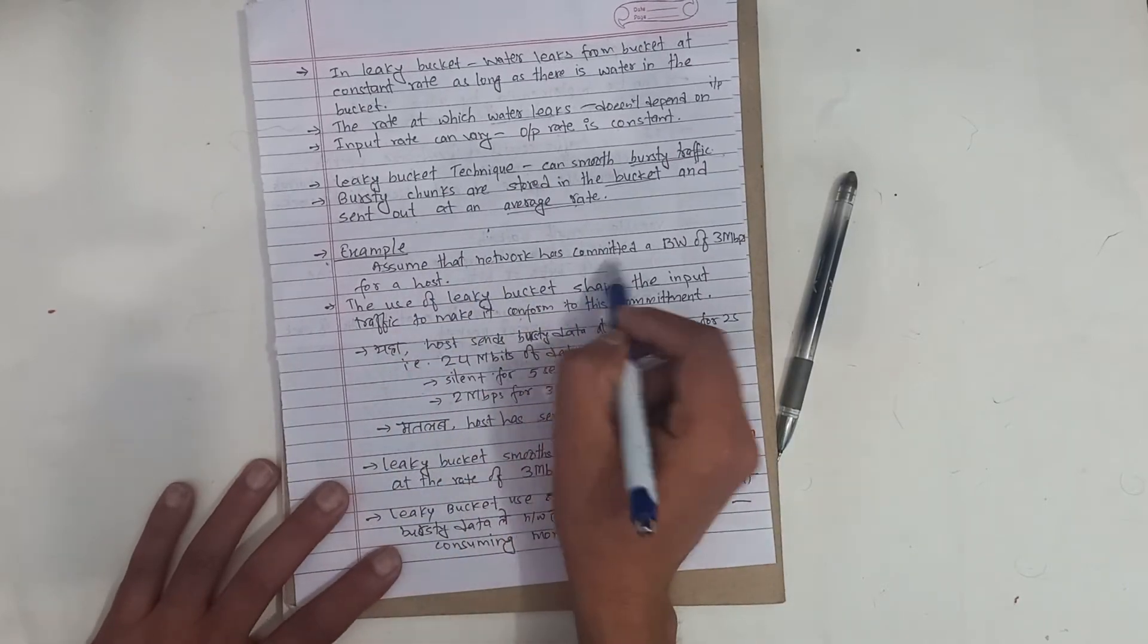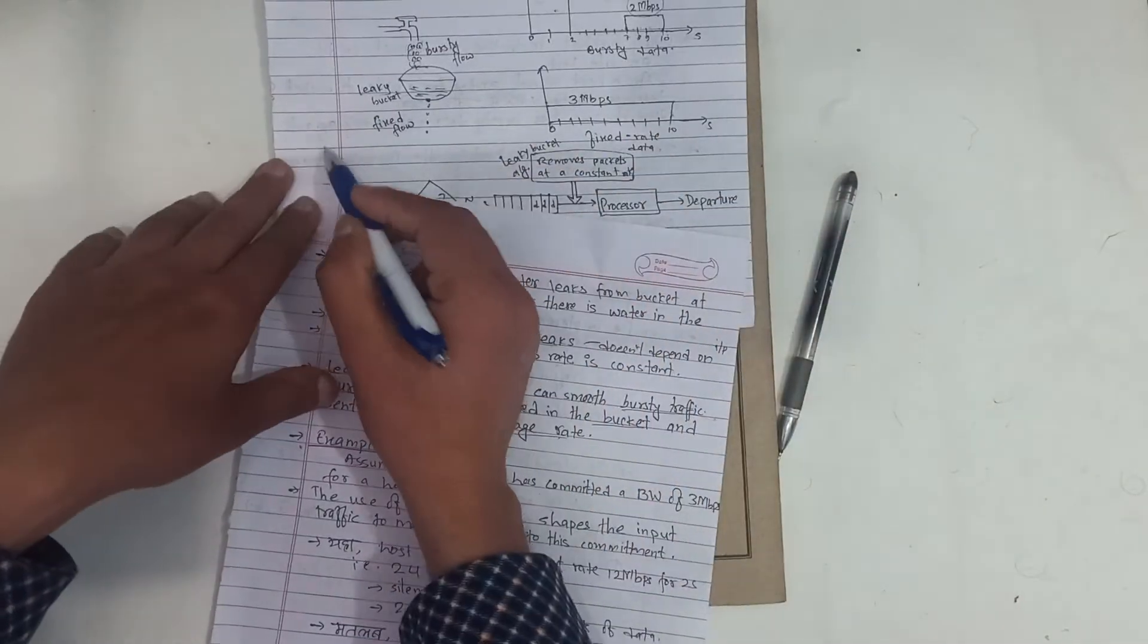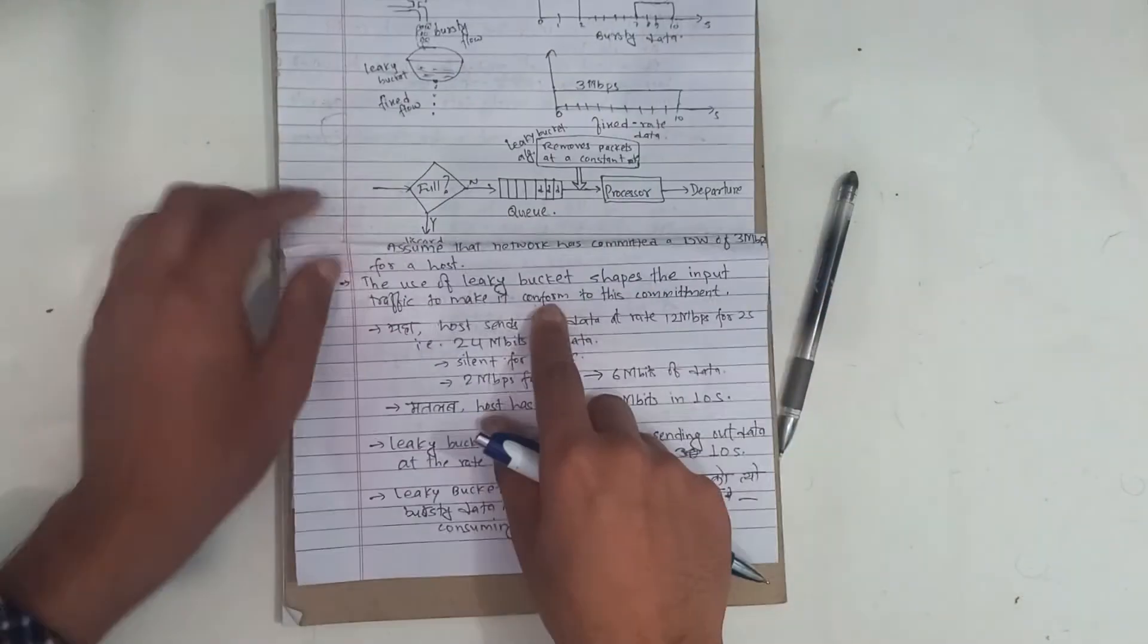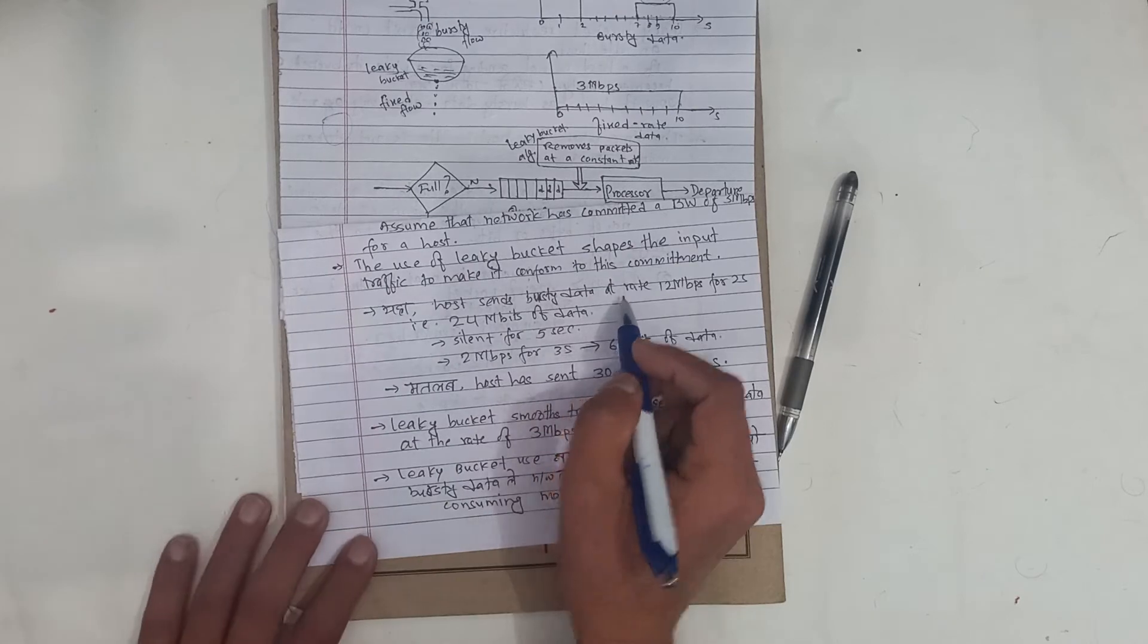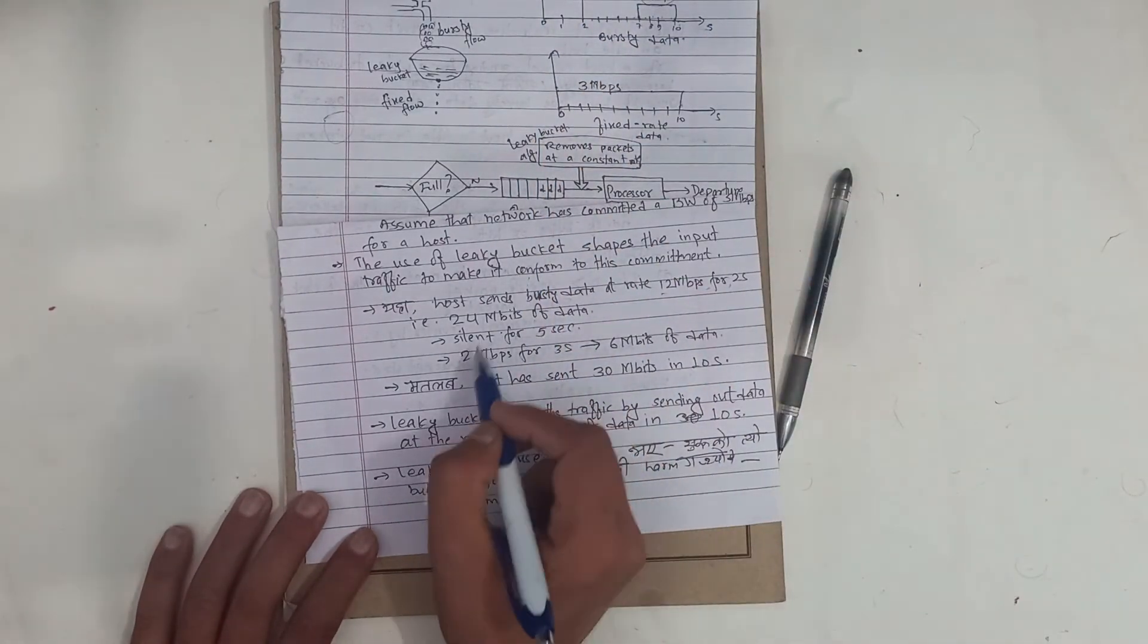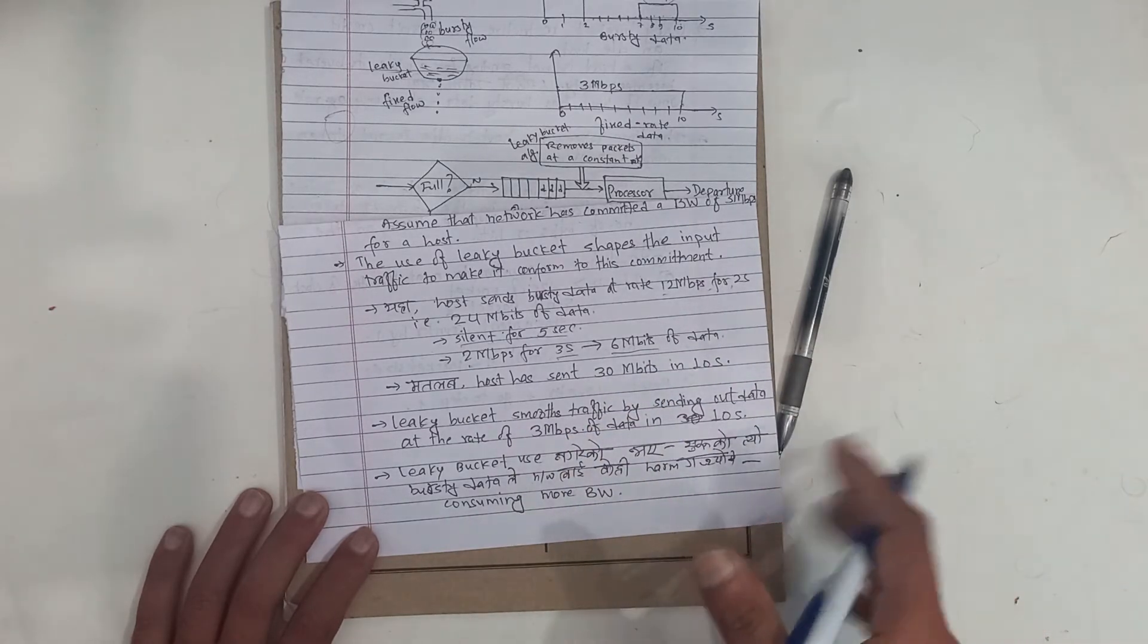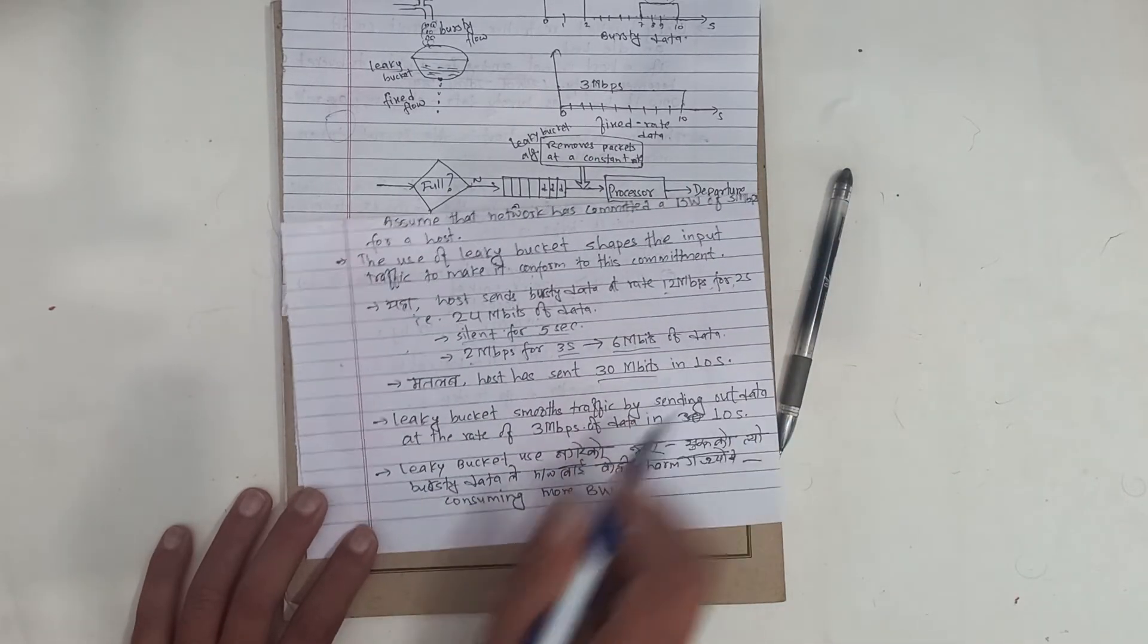For example, assume that the network has committed a bandwidth of 3 Mbps for a host. The host is given this bandwidth. When using leaky bucket, it shapes the input traffic to conform to this commitment. In 2 seconds you have 12 Mbps, then 5 seconds silent, then 2 Mbps for 3 seconds giving 6 Mbps. Total 10 seconds and 30 Mbps.